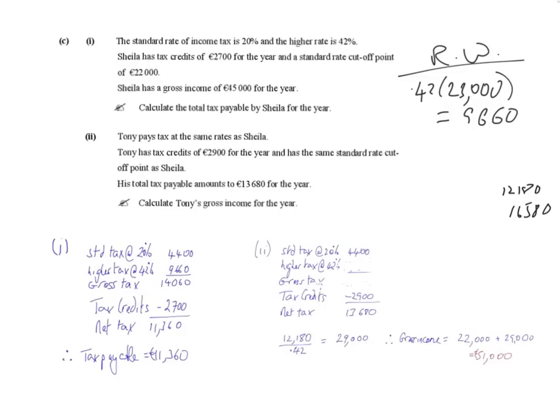So then I would just copy this down. The higher tax we don't really know what that is, so just leave it blank because we don't know what the gross income is. We can't really work that out yet. We don't know what the gross tax is because we don't know what the higher tax is. We do know the tax credits is €2,900, so we can put that in. And we do know that the net tax at the end is €13,680.